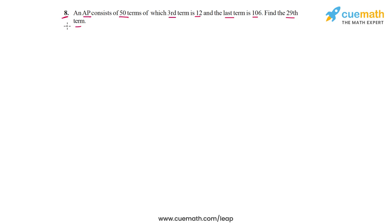Now this question is very similar to the last question of this exercise. It has only been restated a little differently. So we are given that T3 is 12 and the last term is 106. But we also know the index of the last term because we are told that the AP has 50 terms. So we have T3 which is equal to 12 and we have T50 which is equal to 106, and using these two pieces of information we have to find the 29th term.